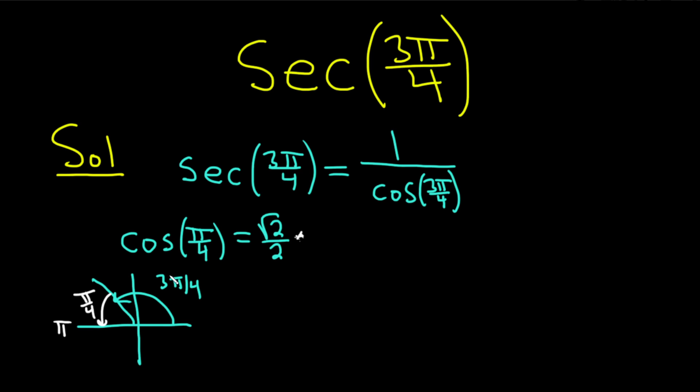So in our case, 3 pi over 4 is here. That's in quadrant 2. And on the unit circle, every ordered pair has the form cosine theta comma sine theta. More specifically, it's the x-coordinate. Cosine is the x-coordinate on the unit circle. And so over here, the x-coordinate is negative. So our answer is negative. So instead of square root of 2 over 2, it'll be negative square root of 2 over 2.